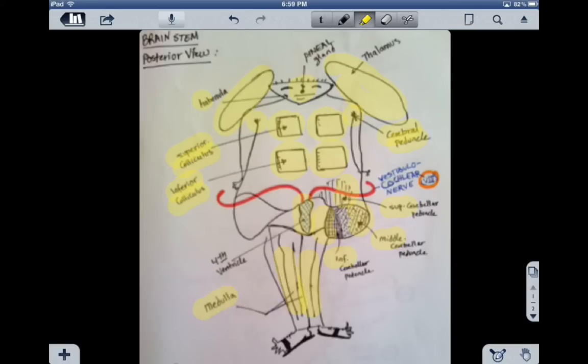One important cranial nerve that actually appears here on the posterior, as you can see, is the vestibulocochlear nerve, nerve number eight, which is sensory. That's why it's in orange, and it has to do with balance, equilibrium, and hearing.